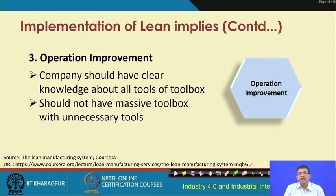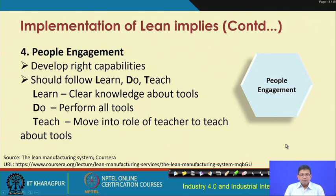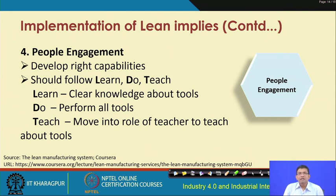Operation improvement is vital. The company should have clear knowledge about all tools in the toolbox — not a massive toolbox with unnecessary tools, but exactly what is required — and then minimize wastage of resources to improve operations overall. Another dimension is people engagement, ensuring that all concerned stakeholders are engaged and follow the objectives: learn — having clear knowledge about the tools; do — performing with all available tools; and teach — moving into the role of a teacher to share knowledge.